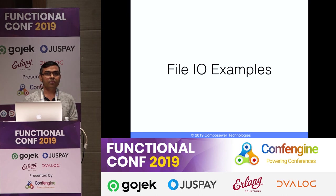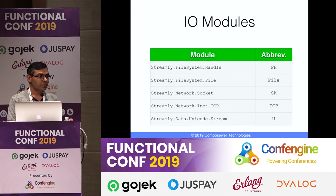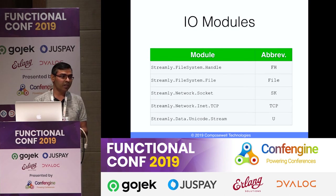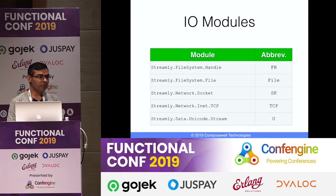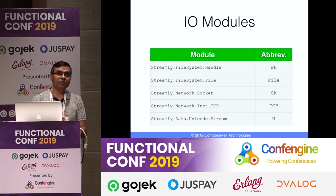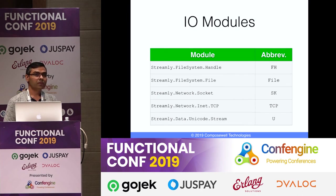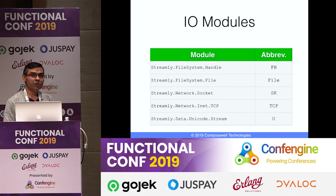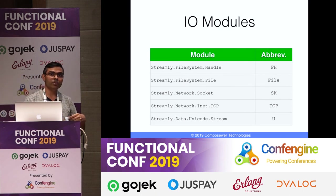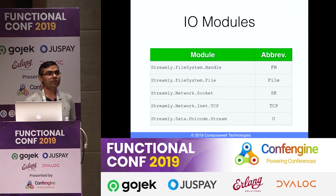Let's look at more real-life, effectful stream examples. File system combinators are in the file system hierarchy: the Handle module works on file handles/descriptors, the File module works directly on file names, the Socket module works on socket handles, the Inet.TCP module works directly on addresses, and the Unicode.Stream module handles Unicode encoding and decoding.